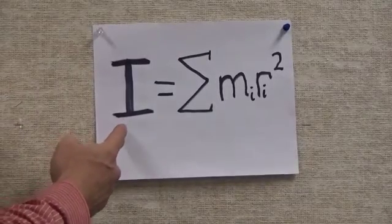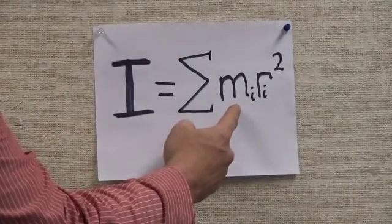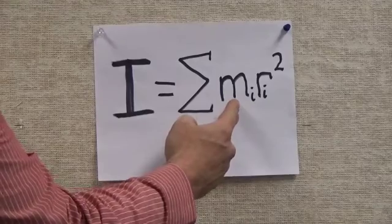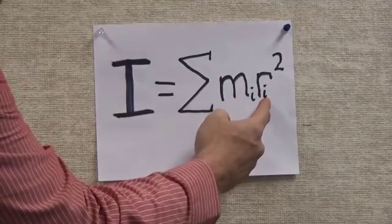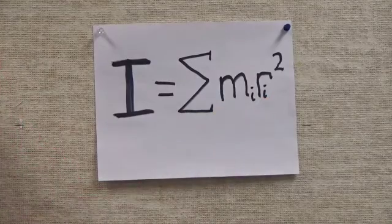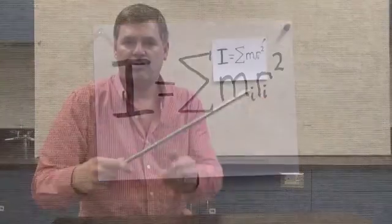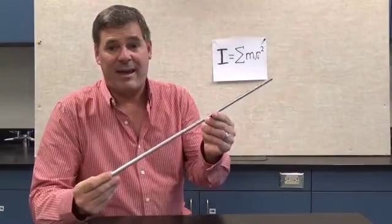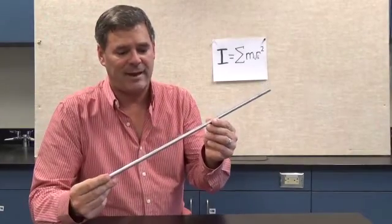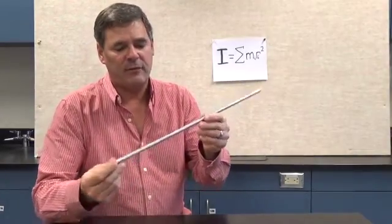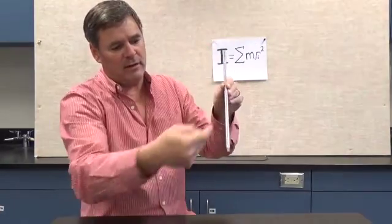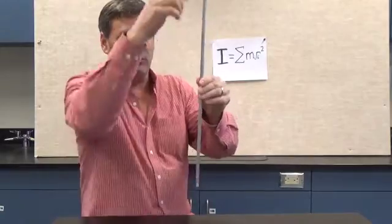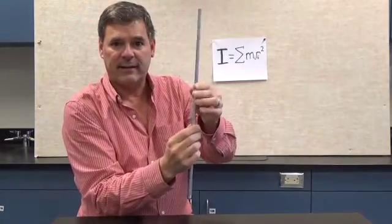So you notice that the moment of inertia not only depends upon how much mass is there, but where the mass is located. How far is it away from the axis of rotation? So first we'll look at a single object, and we'll change where its axis of rotation is. In the first example, the axis of rotation will run all the way along the length of the rod, and it will rotate about that axis like this.